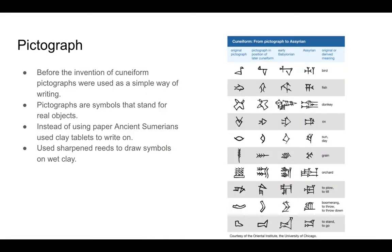First and foremost, let's begin with the early origins. The early origins actually started off with pictographs, which also happens to be one of our vocab words. Before the invention of cuneiform, pictographs were used as a simple way of writing. Just like our definition states, pictographs are symbols that stand for real objects.